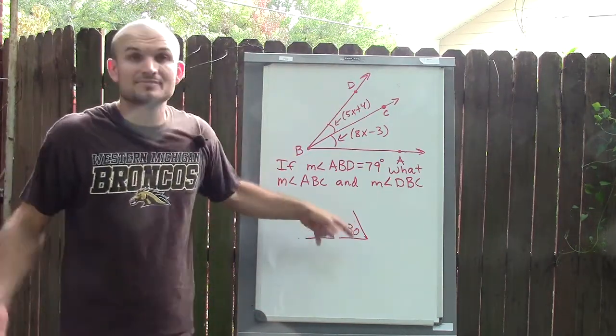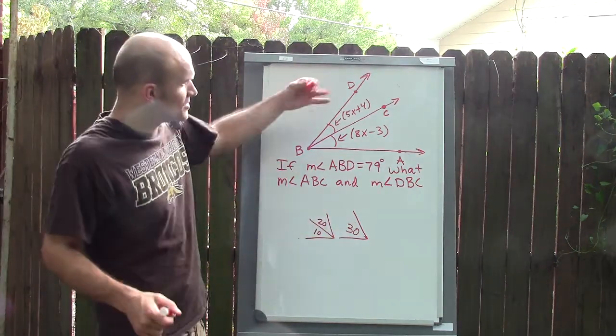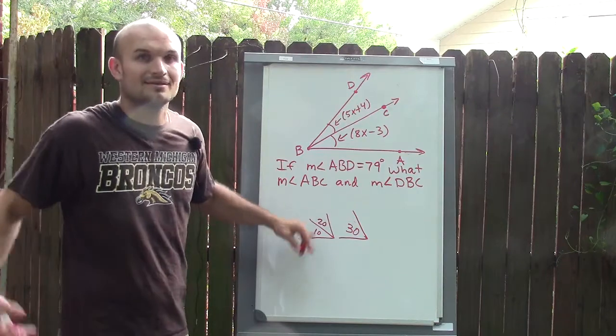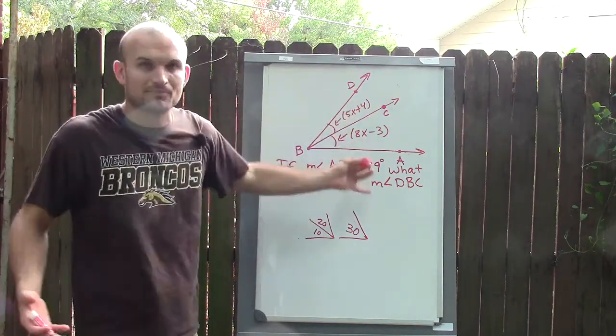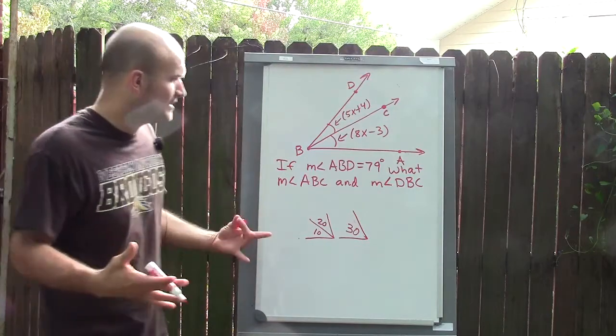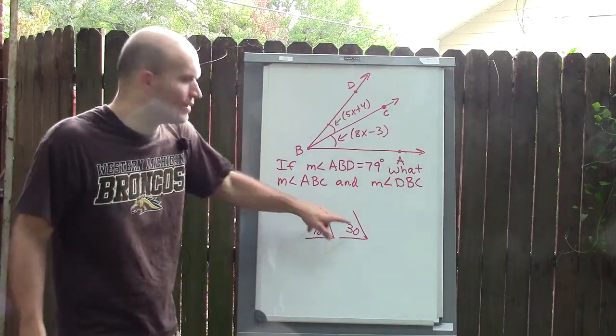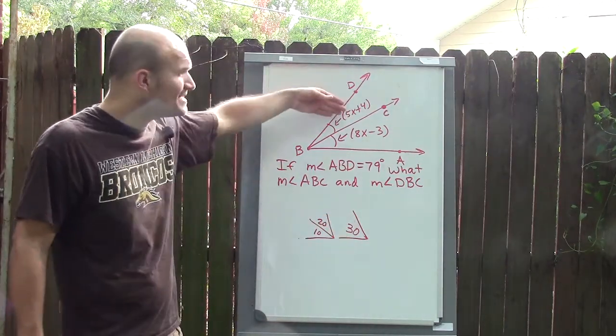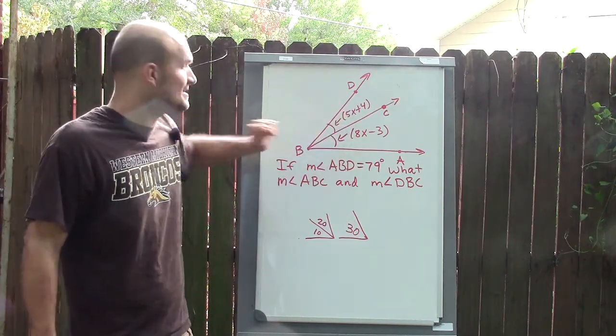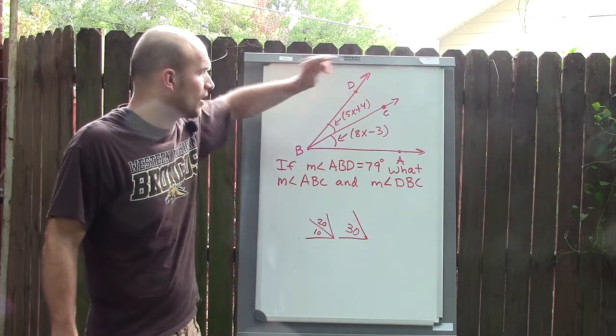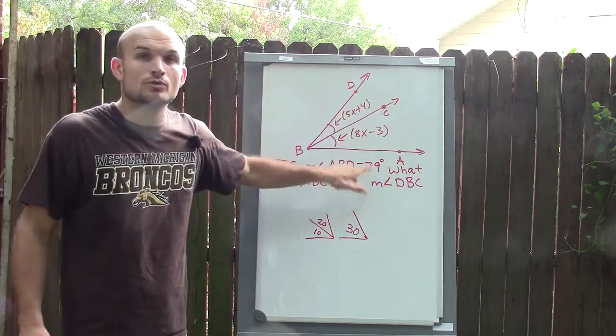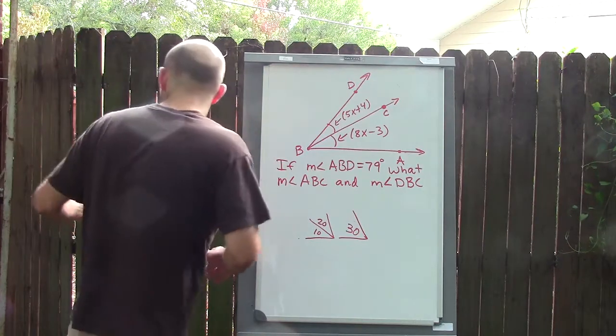That's exactly the same case with this, except instead of dealing with nice angles already, I have expressions, but it's okay. The exact same thing is going to be used. So I can say 10 plus 20 equals 30. Well, in this case I don't have nice little numbers—I have expressions. However, I can say 5X plus 4 plus 8X minus 3 is equal to 79 degrees.